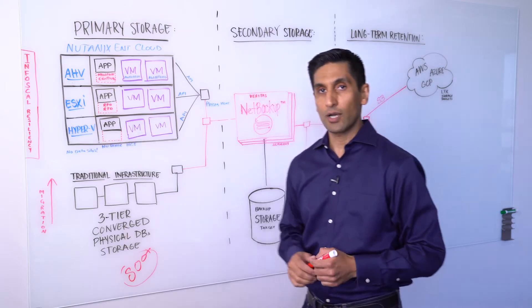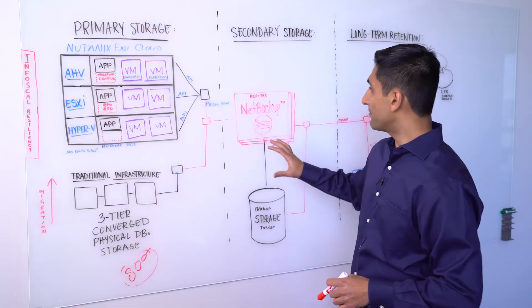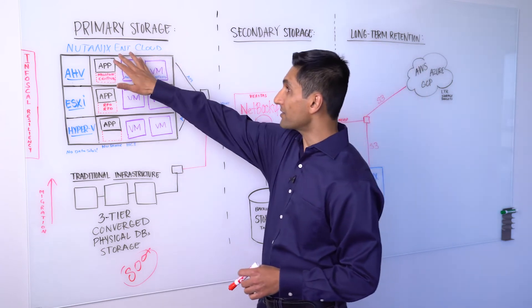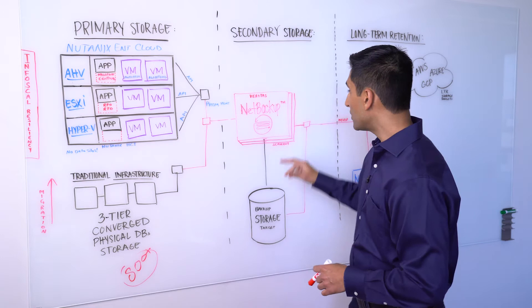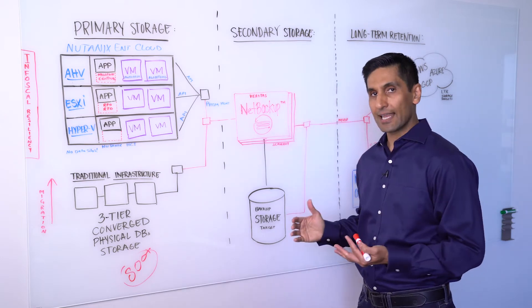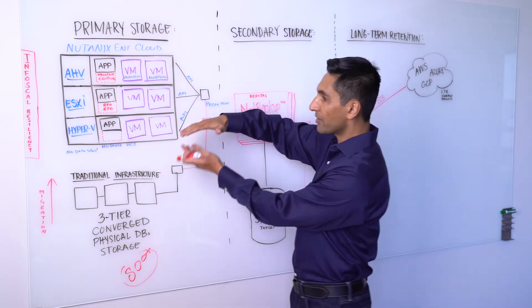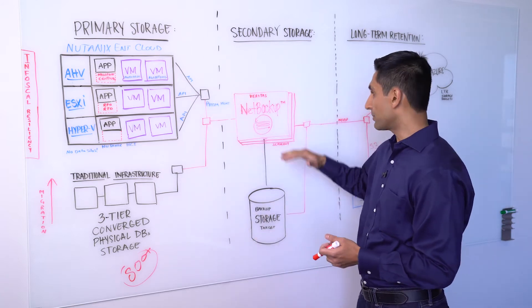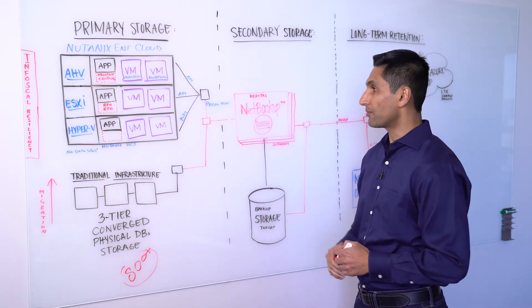So let's move on to use case number one. For use case number one, we have a very close integration between NetBackup, which is our flagship product, with Nutanix Enterprise Cloud. Now, NetBackup is a scale-out solution. So as your hyperconverged infrastructure will grow, you will simply add nodes to NetBackup and it will scale out from there.